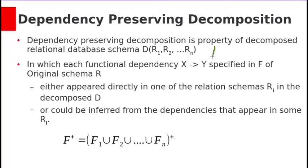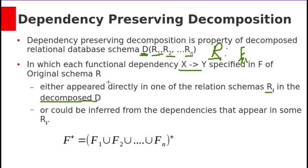Assume we have a relational database schema R with a set of functional dependencies F. If we decompose R into sub-relations R1, R2, up to Rn, and call that decomposed schema D, then in D each functional dependency X → Y specified in F of the original schema R must either appear directly in one of the relational schemas in D, or be inferred from dependencies that appear in some Ri.